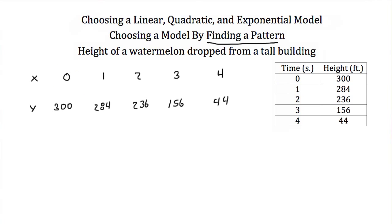From 0 to 1 I'm going up 1. From 1 to 2 I'm going up 1. From 2 to 3 I'm adding 1. And from 3 to 4 I'm adding 1. This is all consistent, which means now I can just look at my y values.